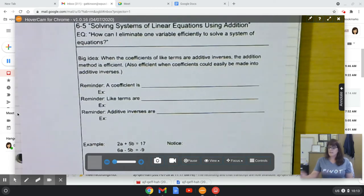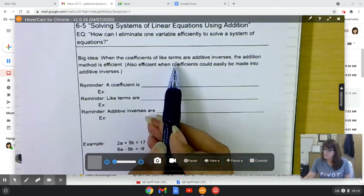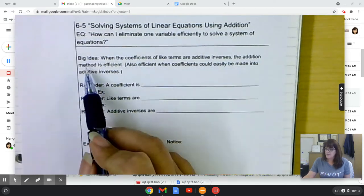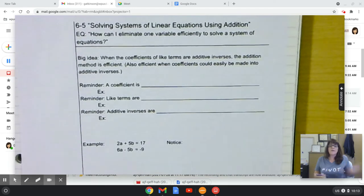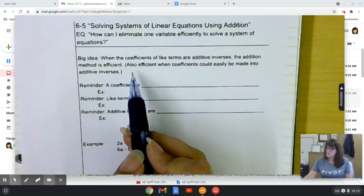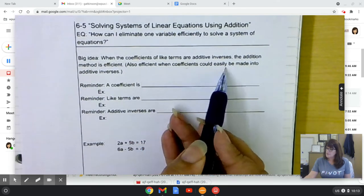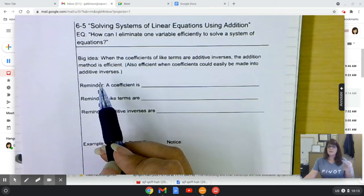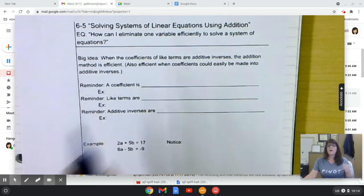Now, our big idea is when the coefficients of like terms are additive inverses, the addition method is efficient. That's telling you when to choose it. It's also efficient when coefficients could easily be made into additive inverses. I'm going to show you an example of both. Please copy these examples down. Having them in your notebook can be lifesaving on a test.